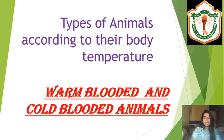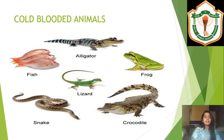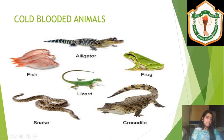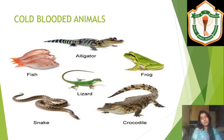Let us start. Here are a few examples of cold-blooded animals: alligators, fish, frog, lizard, snake, and crocodile. We must have noticed that during winters we are not able to see the lizards that are on our walls during summers — they just disappear somewhere. Why does that happen?